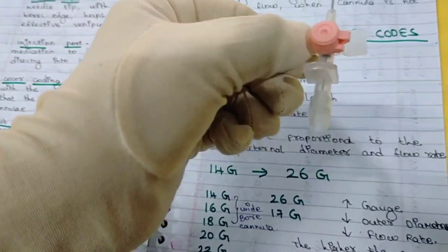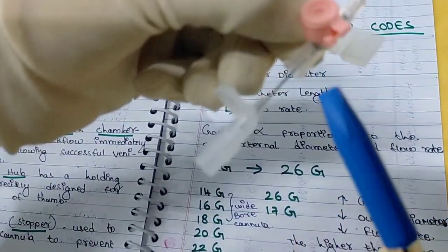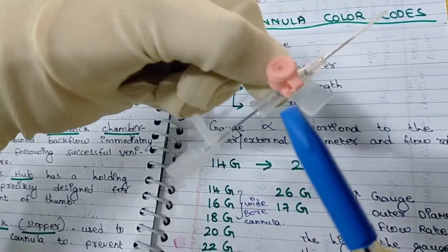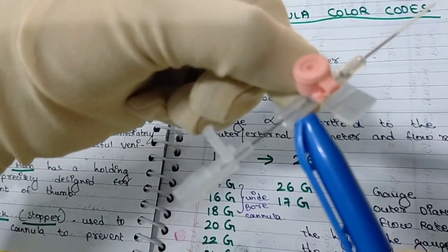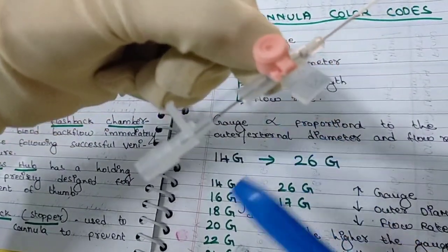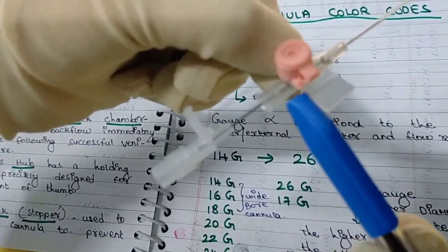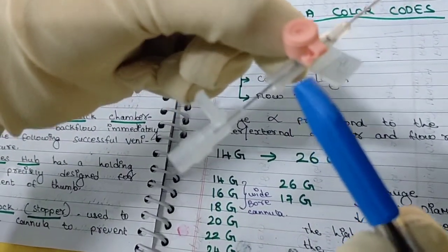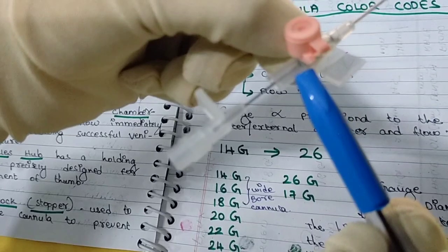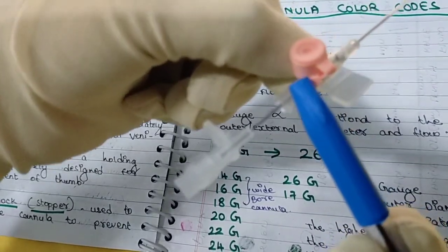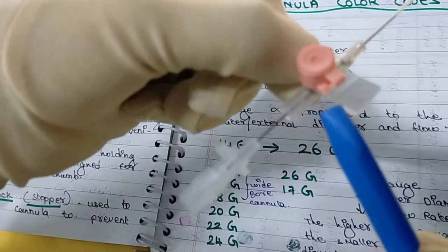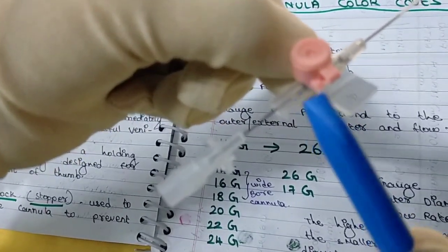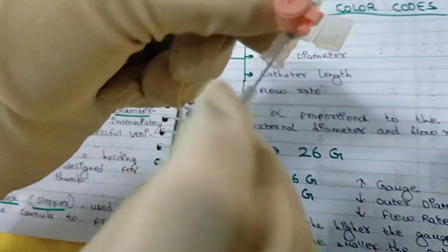Then next you have the flashback chamber. This part is called the flashback chamber. This flashback chamber is transparent — once the catheter is placed, meaning after successful venipuncture, you can immediately see blood appear here. So this transparent flashback chamber shows blood backflow immediately after successful venipuncture.